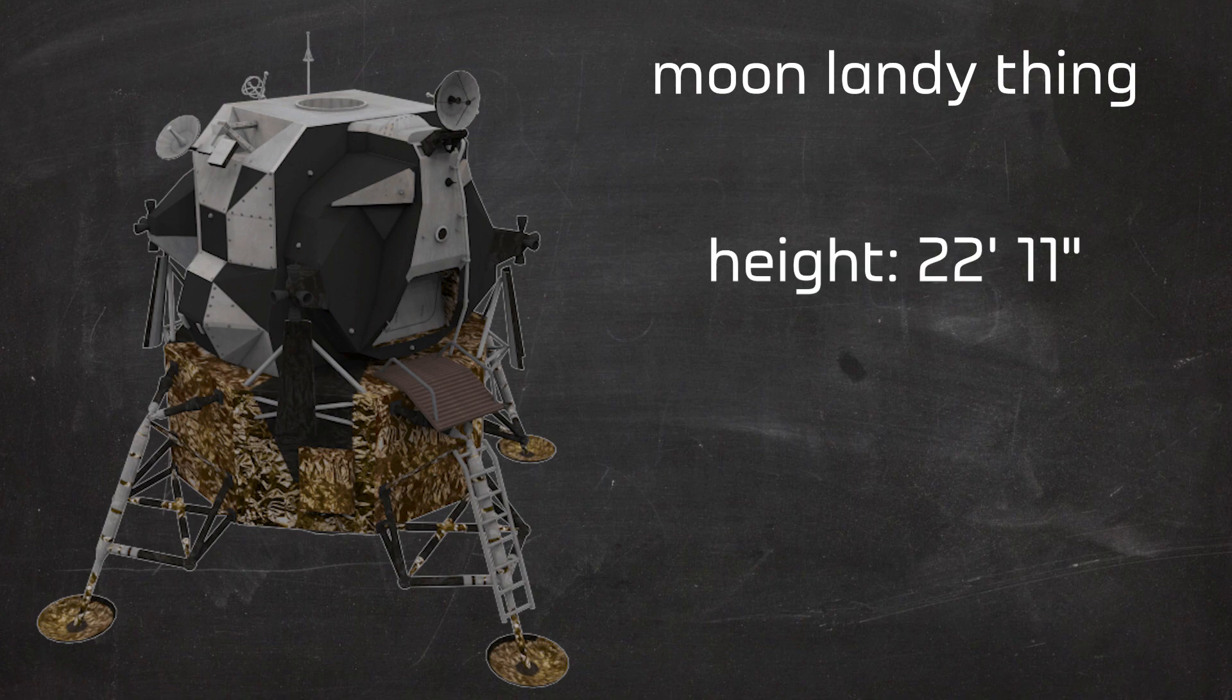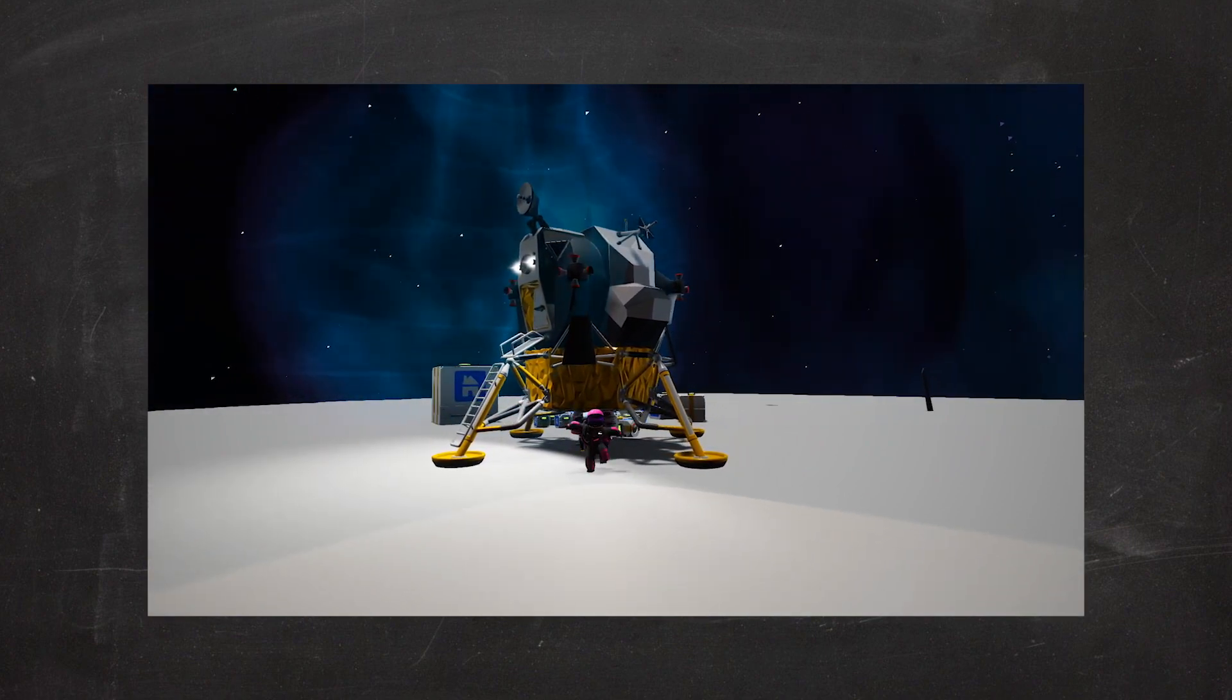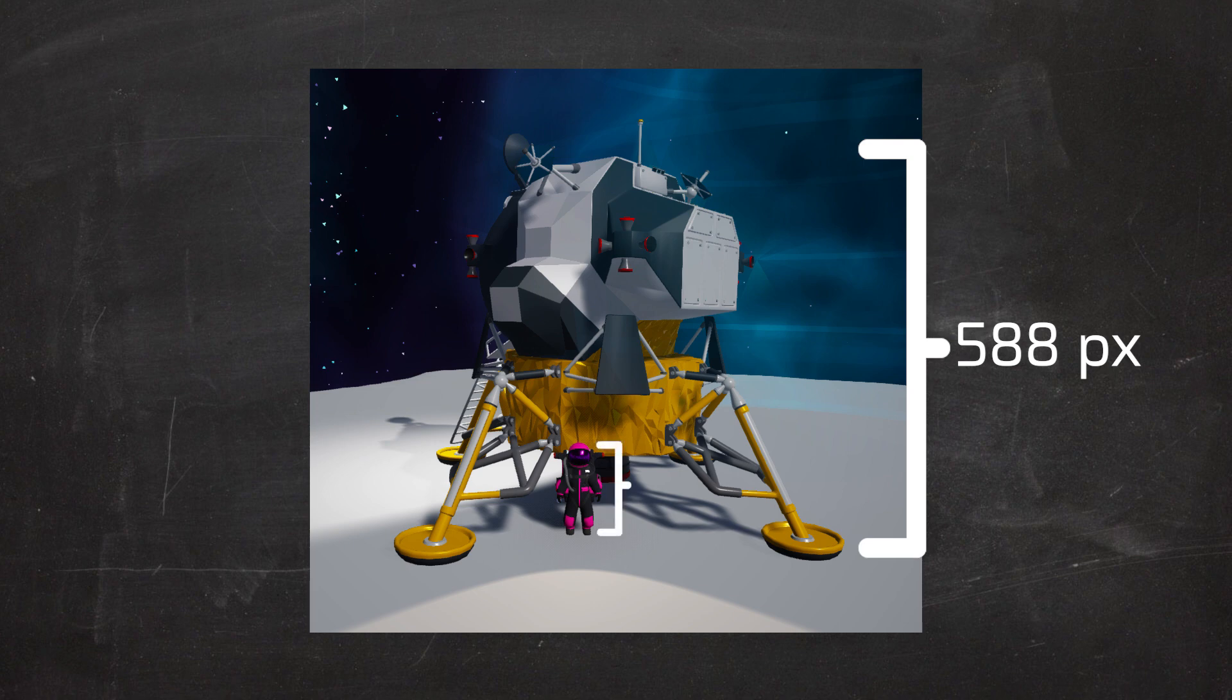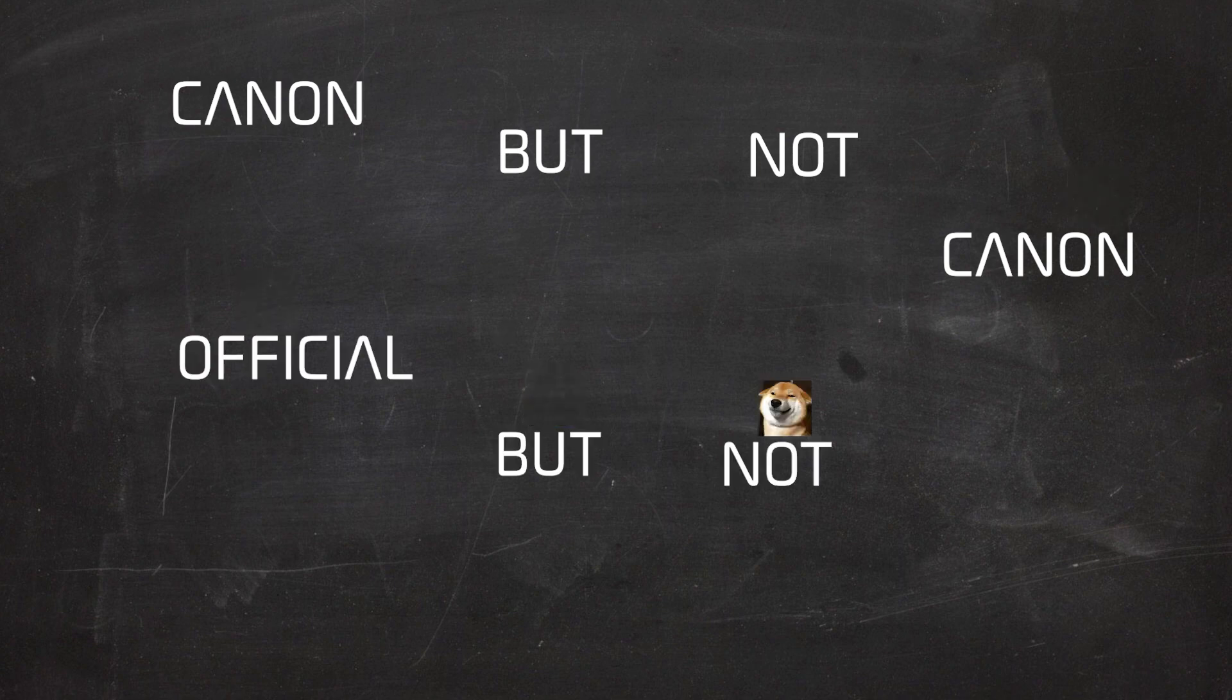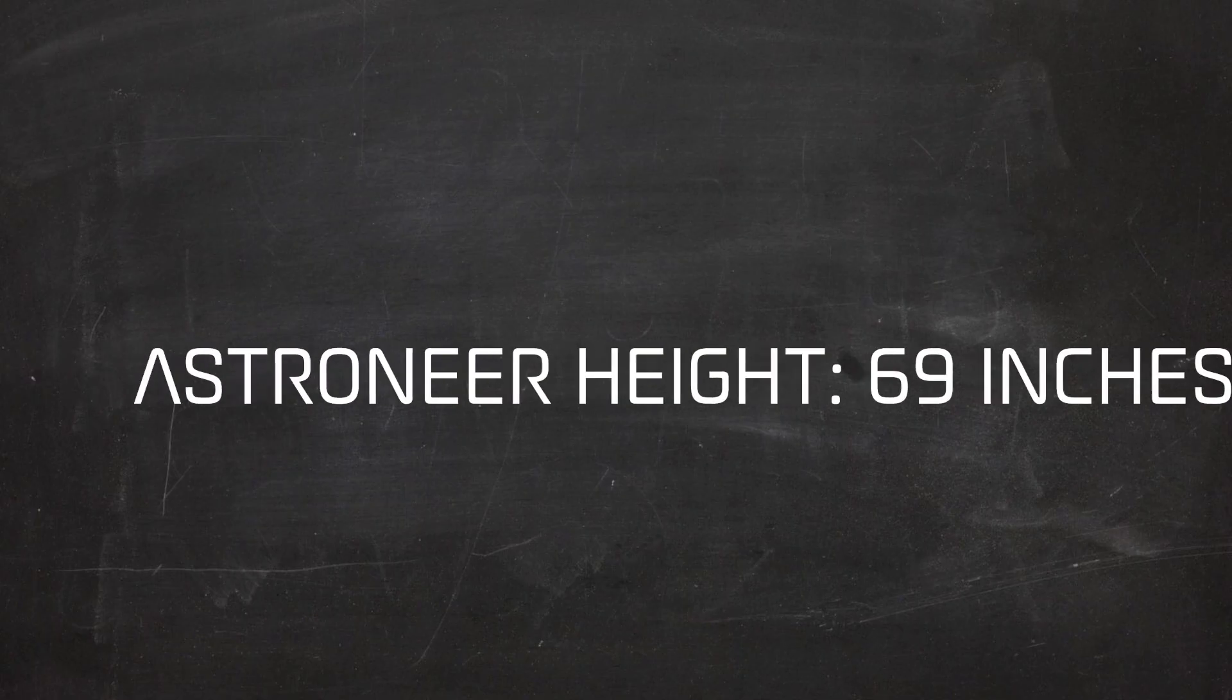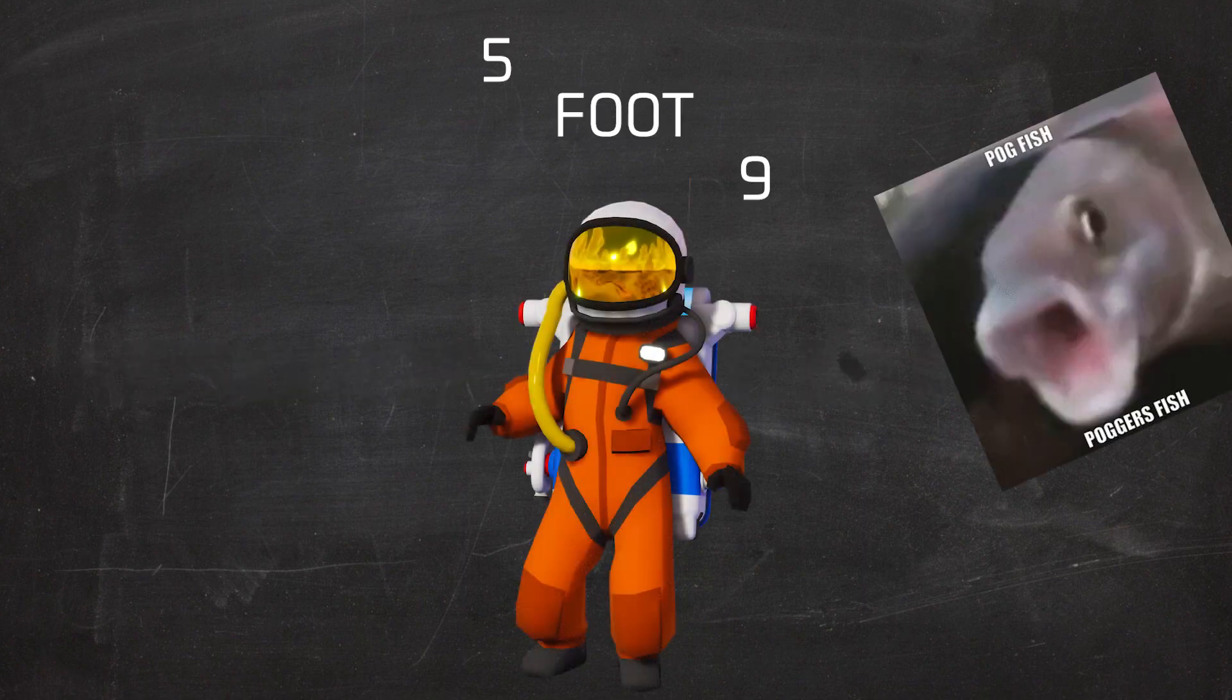The Moon Lander's official height is 22 feet and 11 inches according to multiple sources. So using this information, I stood next to this thing, took a screenshot, and did the following math against the official height of an Astroneer. I started with counting the amount of pixels in the height of the lunar lander, which was 588. Then I counted the amount of pixels in the height of the character, which was 147. Finally, using the confirmed real-life height of the lunar lander and some proportions, I got the canon, but not canon, official, but not official height of the Astroneer, which was 69 inches tall, nice, but an actual height that is 5'9".